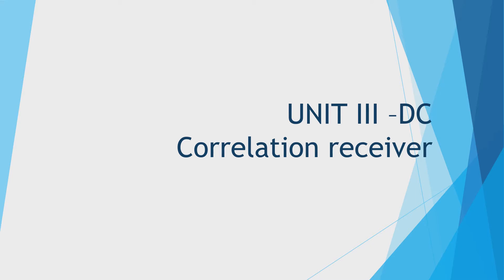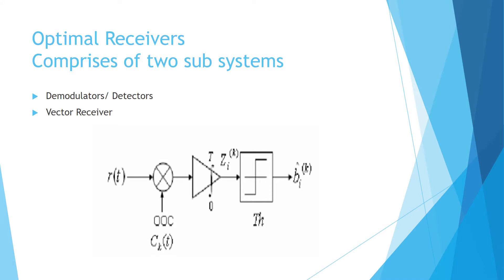Today's topic is correlation receivers. A correlator comprises of a multiplier — the received signal x(t) is multiplied with a replica of the input signal c_k(t). The product of these two signals is integrated over a time period of 0 to T, sampled, and fed to a decision-making device. Based on a threshold, the bit is considered either 1 or 0.